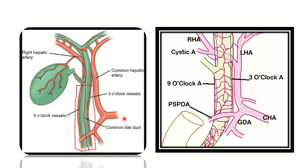We need to find out the blood supply of the common bile duct. Here we can see it gets blood supply from this artery, and if we trace it upward, it arises from the common hepatic artery. This branch is the right hepatic artery, so the blood supply arises from the hepatic artery.